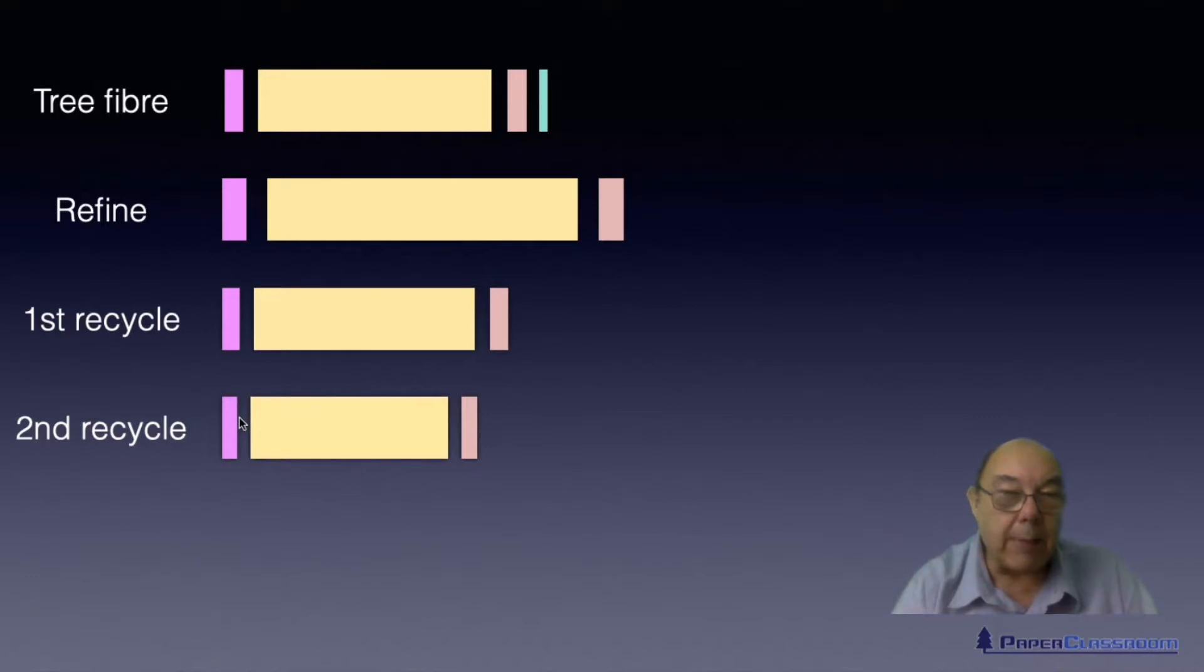then that gap will get even smaller, this layer will get more dense and smaller, these layers will get more dense and smaller, and it's harder still to get water in. So the fiber has become even stiffer.